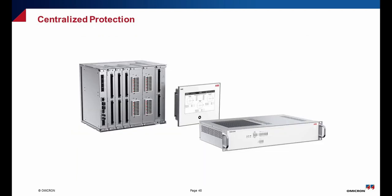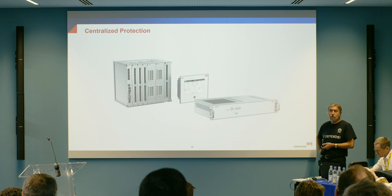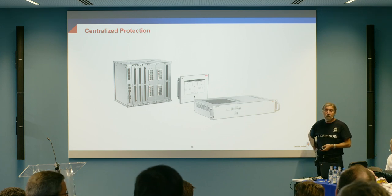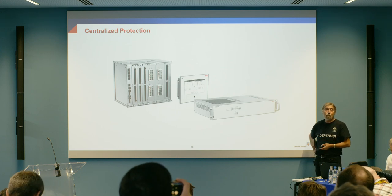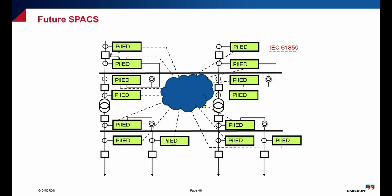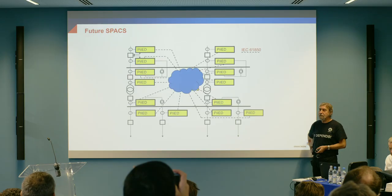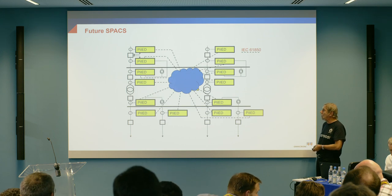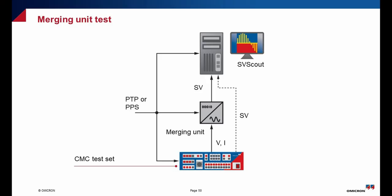Something new that is starting to happen now is the transition from boxes to centralized protection and control solutions. This is an example of a centralized protection and control device that can protect up to 20 feeders in a substation — this is the trend for the future. And the real future trend is protection as a service — protection in a cloud. Some people say you are insane, but I really believe this is the future and it's not going to be such a distant future. All of this obviously has to be tested in order to be put in operation.